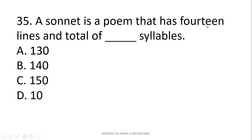Next: A sonnet is a poem that has 14 lines and a total of blank syllables. Each line in a sonnet has 10 syllables. So, 14 lines times 10 syllables equals 140 total syllables in one sonnet.